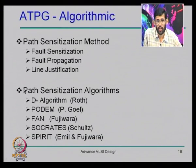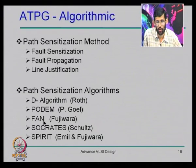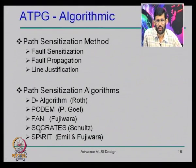Several algorithmic methods have been presented in the literature. The D algorithm was given by Roth from IBM in 1966/1968 — the first complete ATPG algorithm. In 1981, the PODEM algorithm was given by Goel from IBM. In 1984, the FAN algorithm was given by Fujiwara. Other popular algorithms include Socrates, which uses a learning process, and SPIRIT, also from Fujiwara's group. All algorithmic methods are based on three steps: fault sensitization, fault propagation, and line justification.